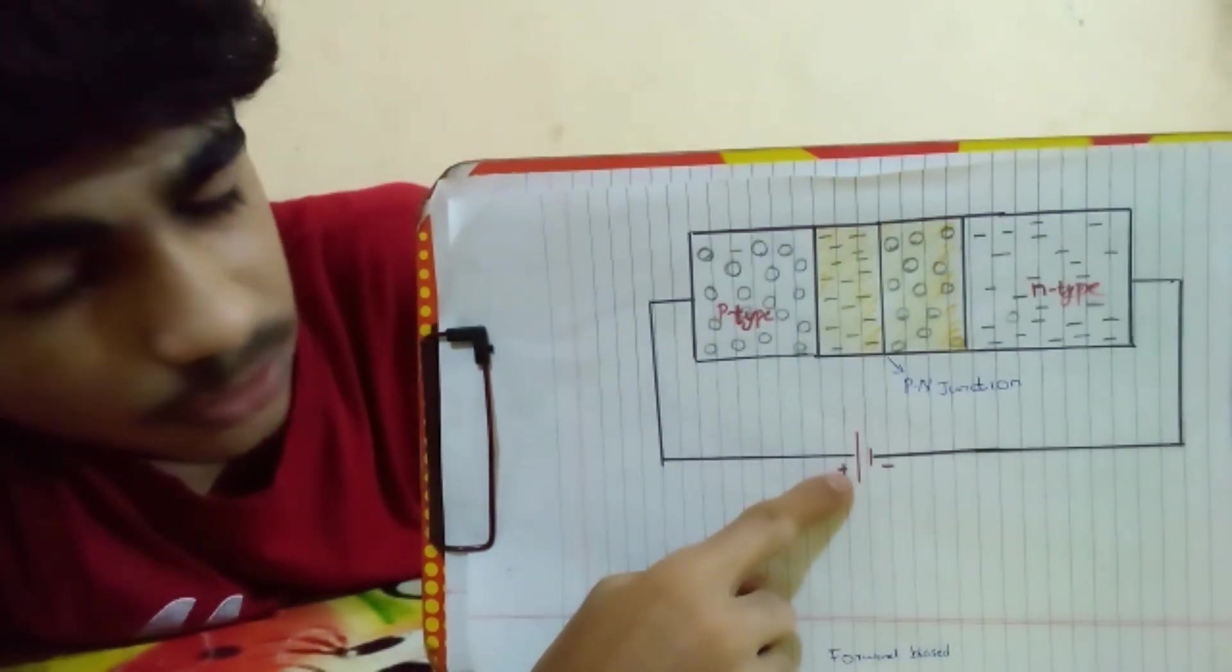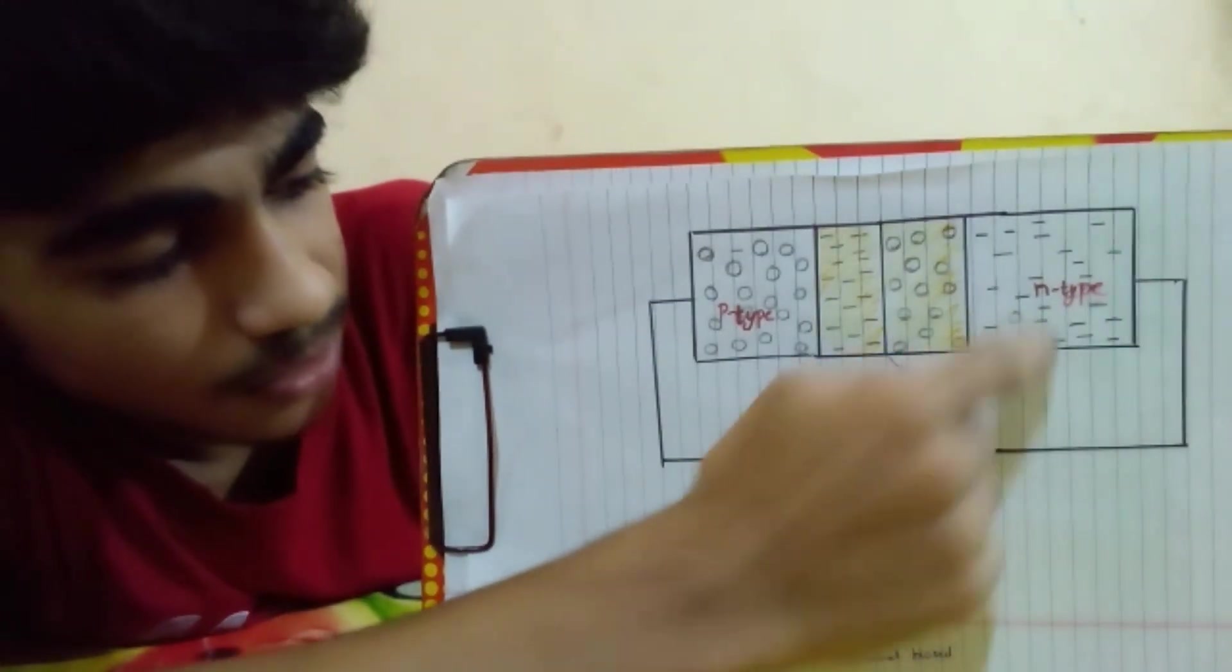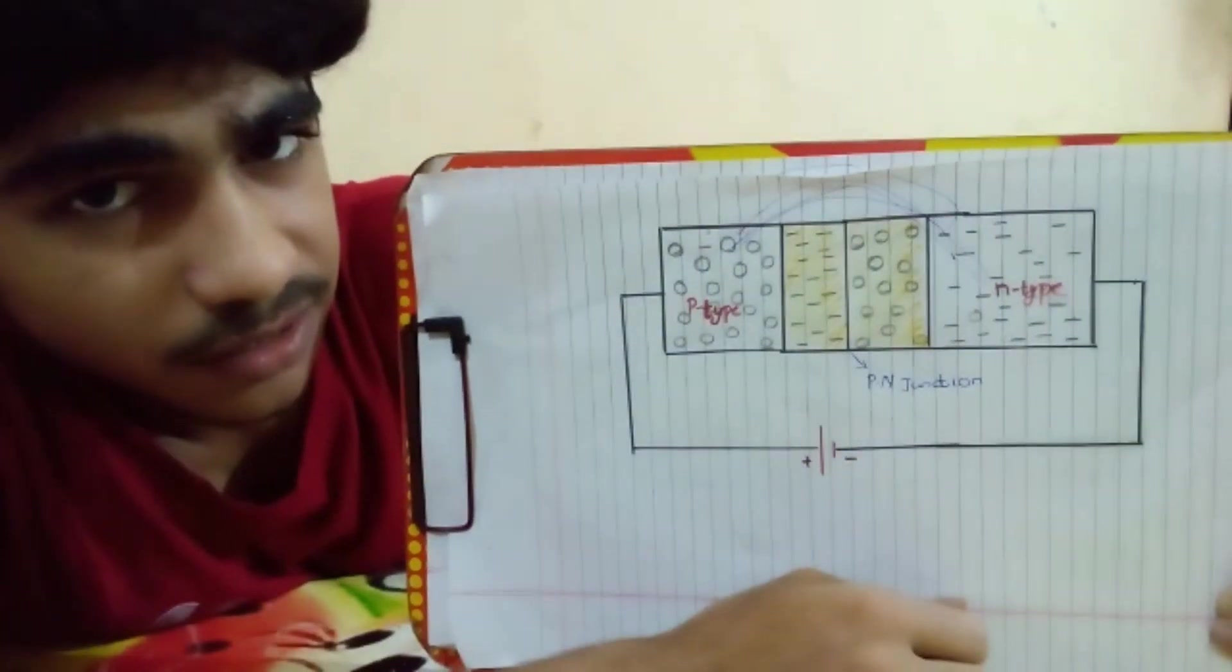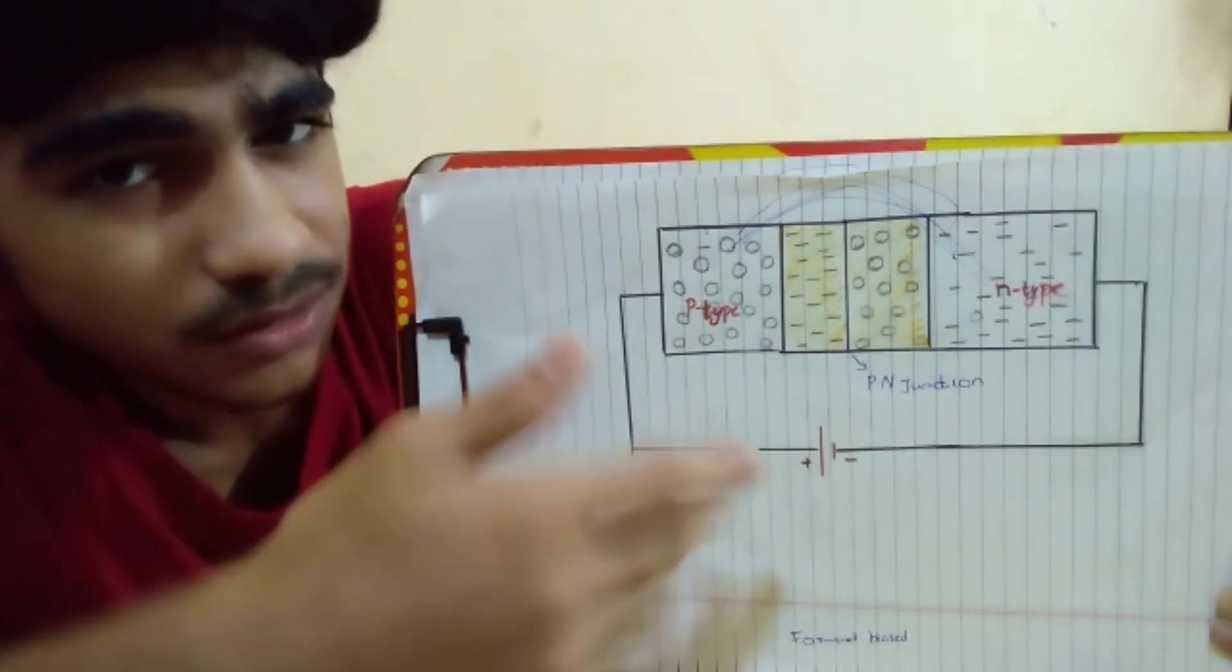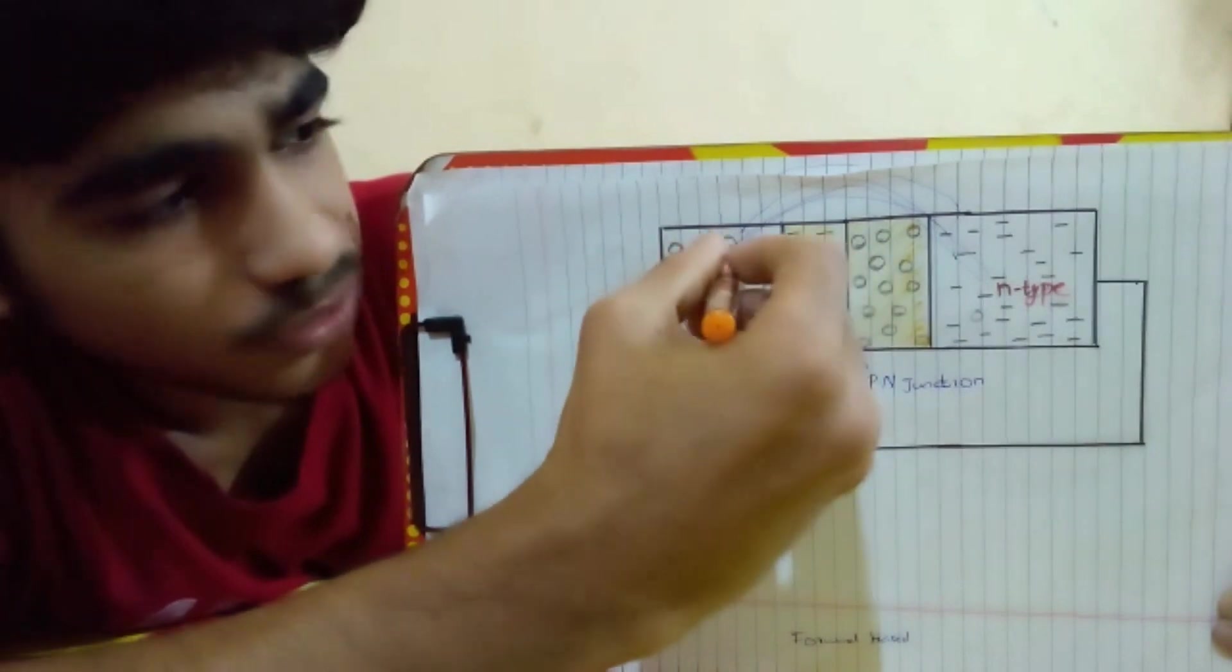So we can see over here the positive terminal of the cell or the voltage source is connected to the P type, while the negative terminal is connected to the N type. So we are giving it extra energy to push these majority carriers to the other side. So what will happen next is that after a certain amount of voltage is reached, these majority carriers will migrate and the diode just acts like a conductor.